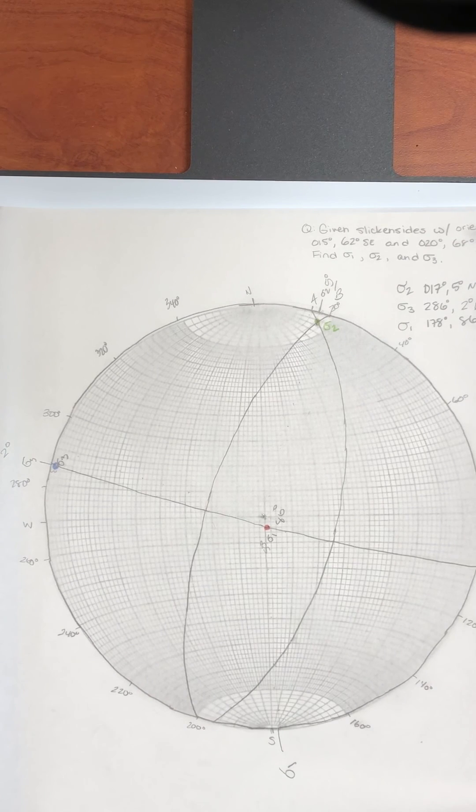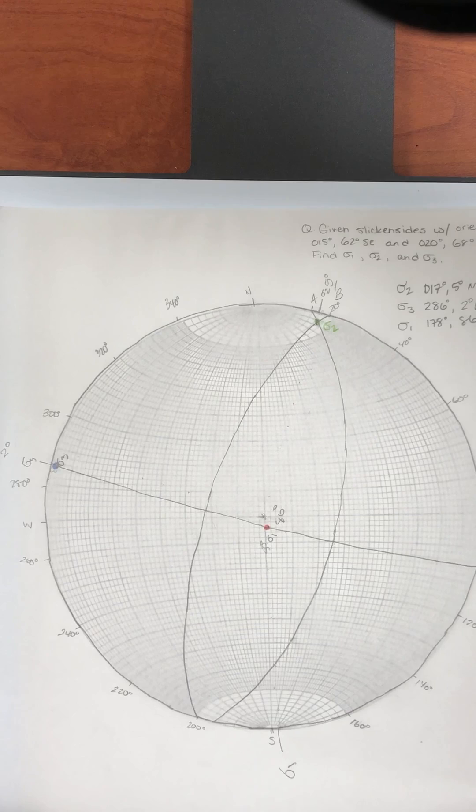All right. I hope that that helped you guys learn how to find orientations of sigma one, sigma two, and sigma three. The principal stresses when you're given information about the fault planes. Thanks.